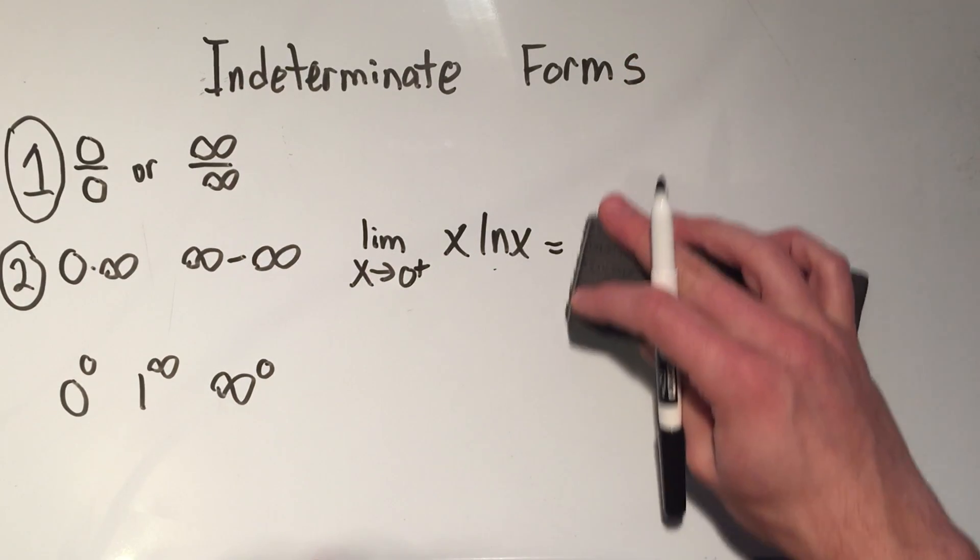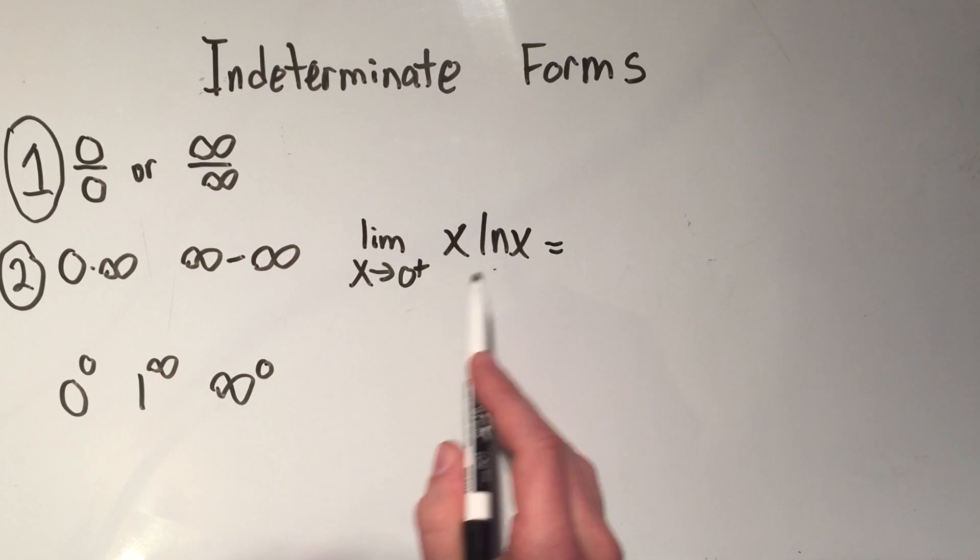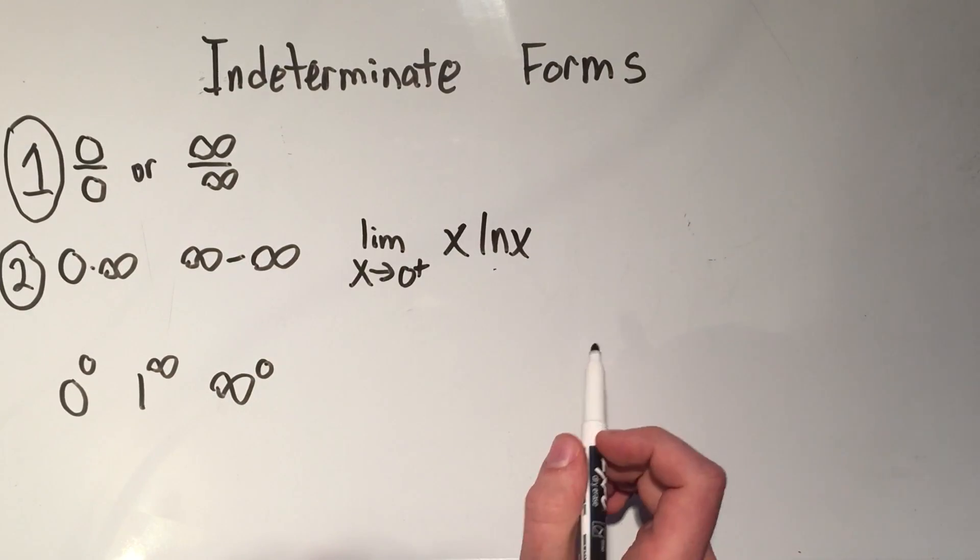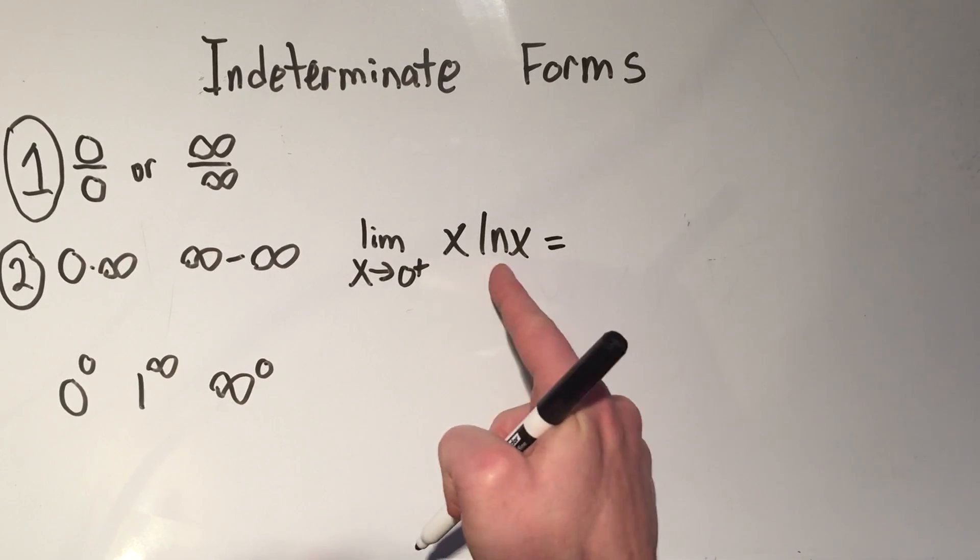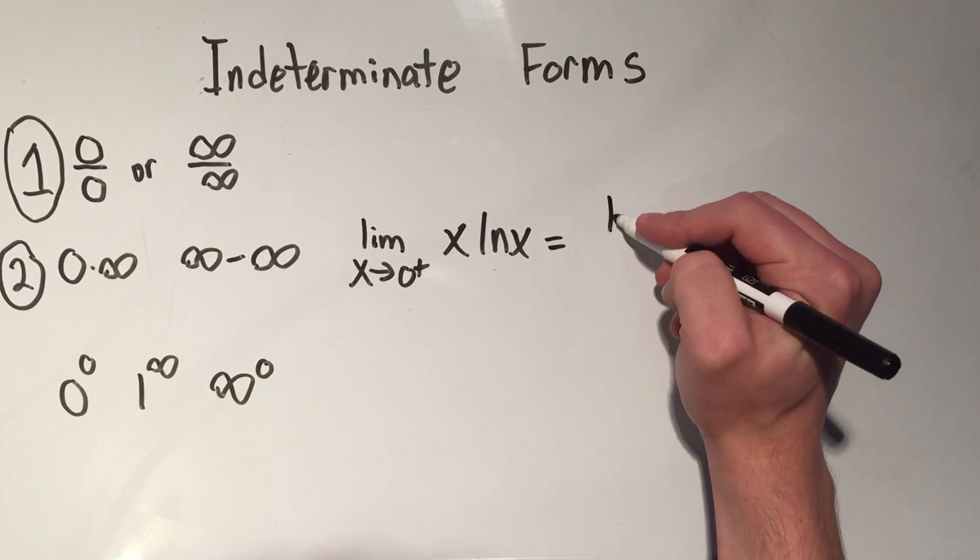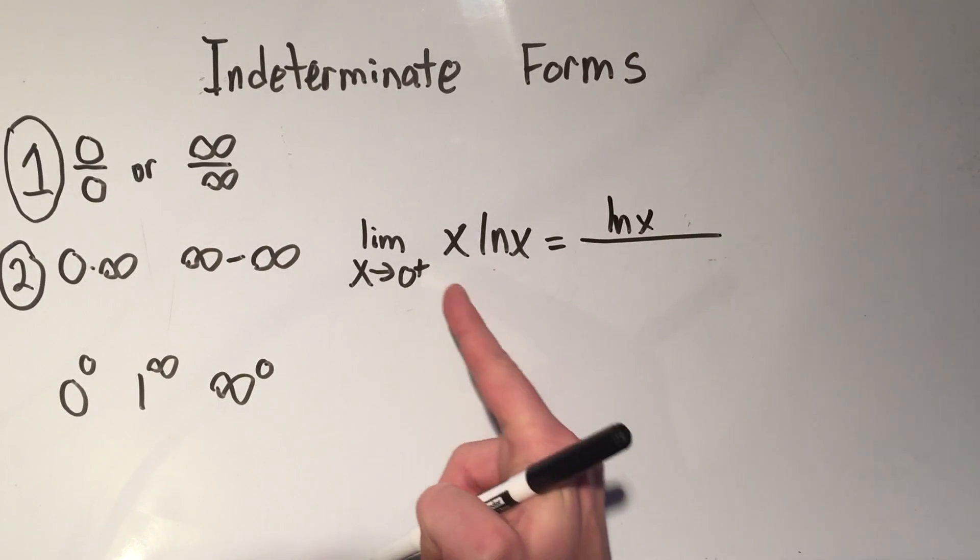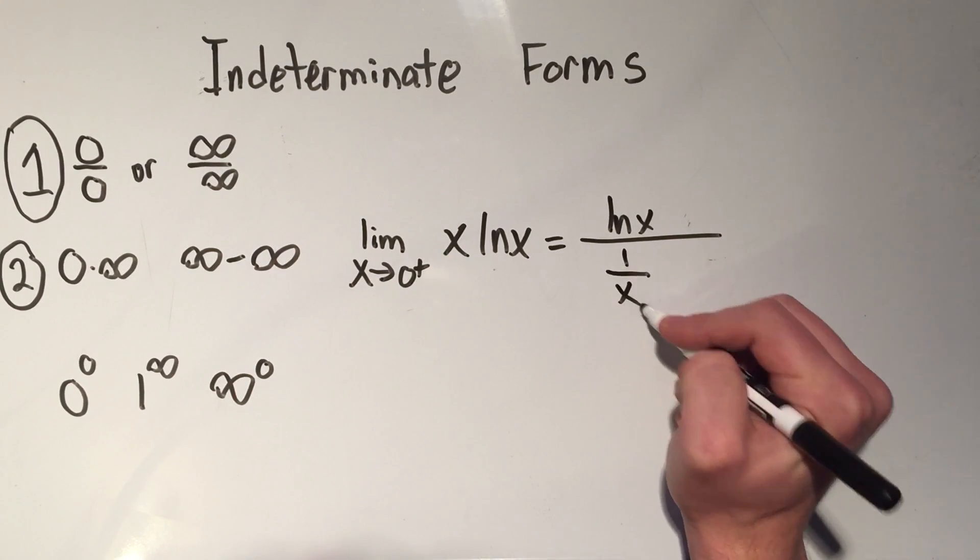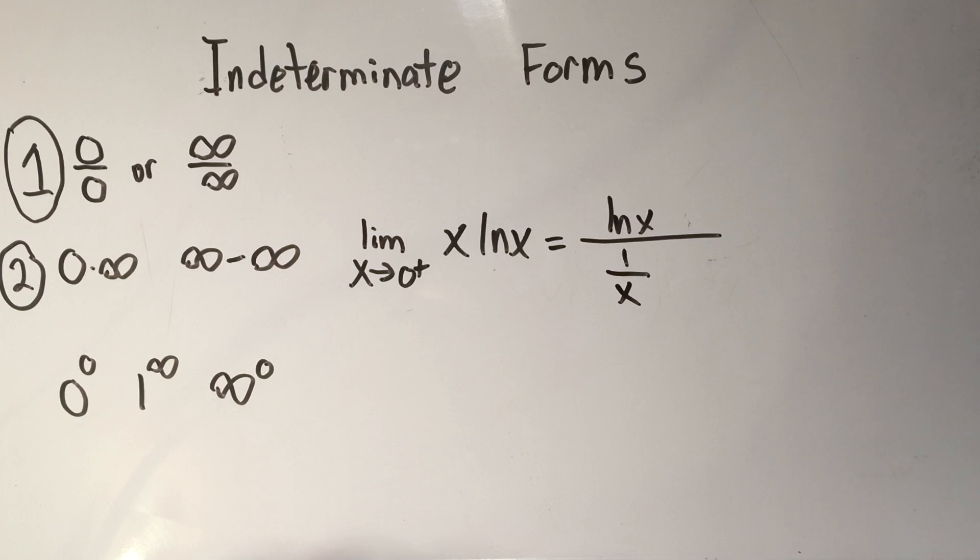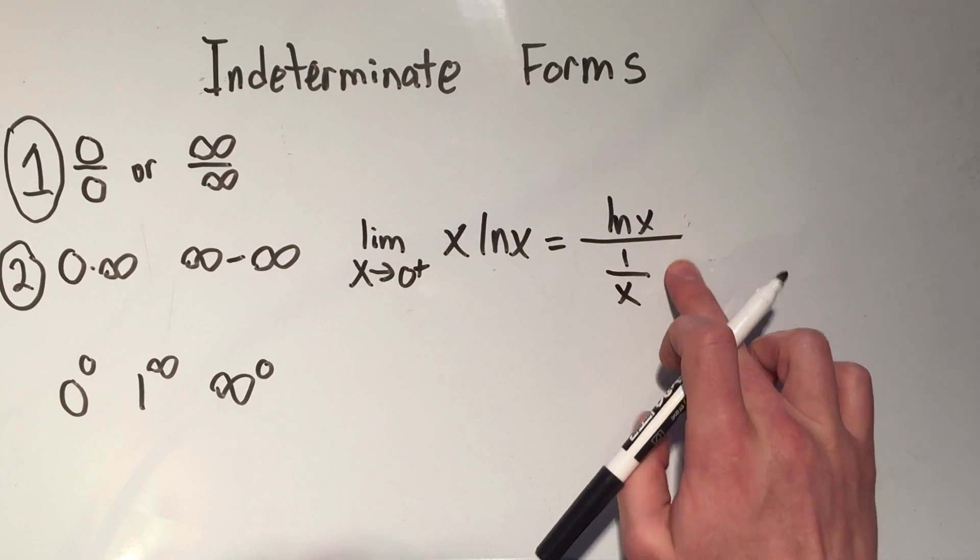But the strategy is you write this as a fraction. Okay, so you've got this function times this function, and all you do is instead of writing times the first function, you write one over that function. And these are completely equivalent statements.